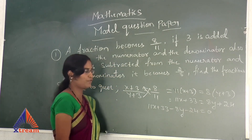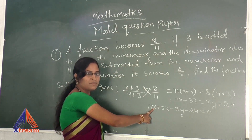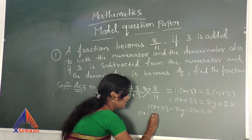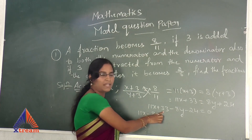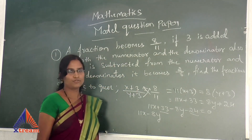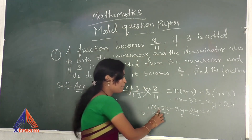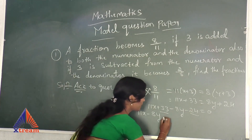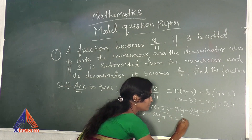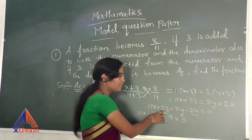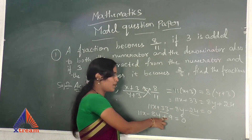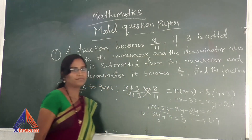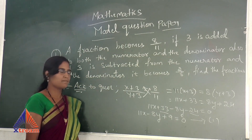Now collect like terms. X and Y terms stay on one side. We have 11X minus 8Y. For the constants, plus 33 and minus 24: since 33 is the bigger number with a plus sign, 33 minus 24 gives plus 9. So the equation becomes 11X minus 8Y plus 9 equals 0. This is equation number 1.